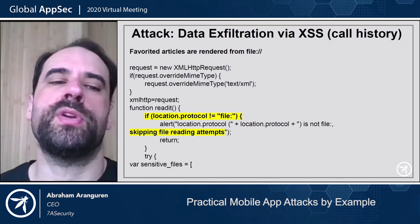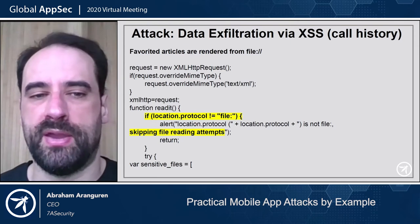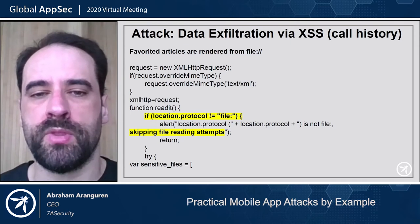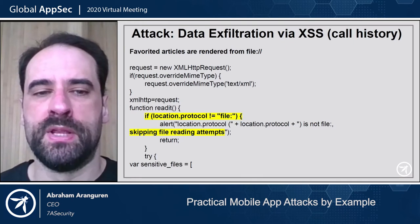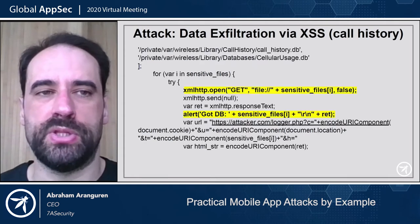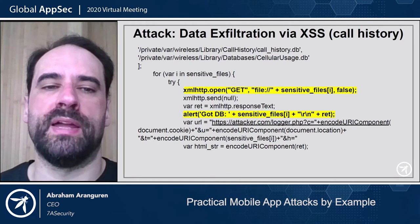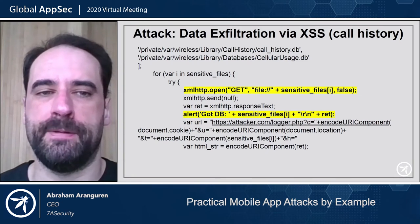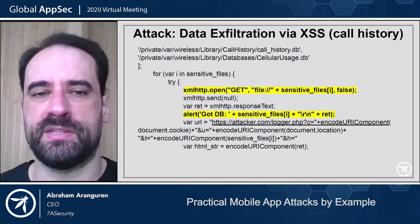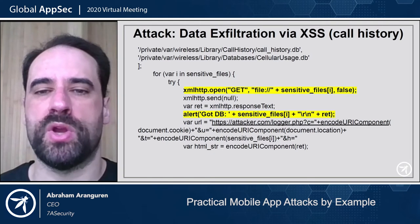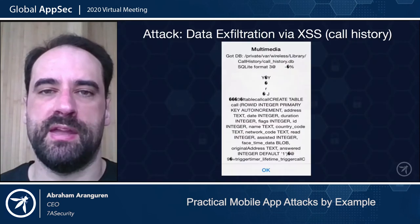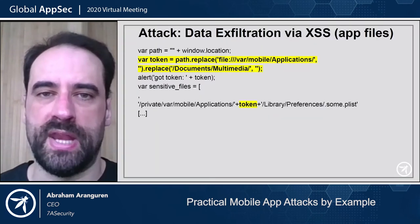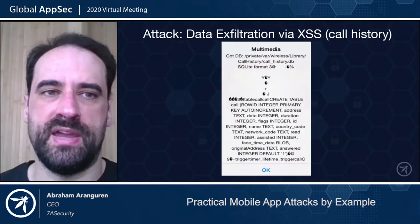Another thing we could do here is data exfiltration. When articles were saved as favorites, they would run from file. We can read all the sensitive files in a loop — define an array of sensitive file paths, loop through them, make XMLHTTPRequests to retrieve them, and use an alert to see if we can read them on the app. This is how it looks in practice, reading those files.